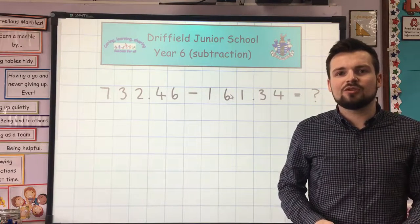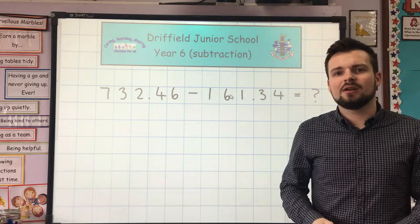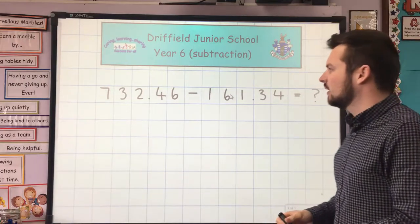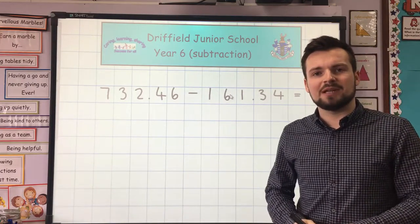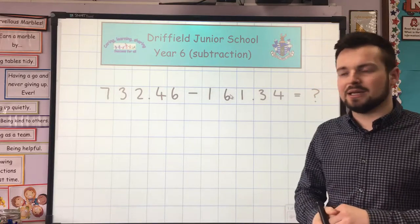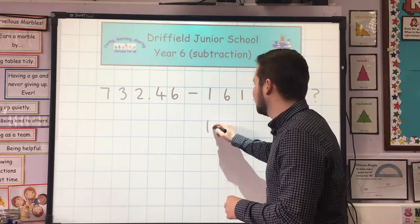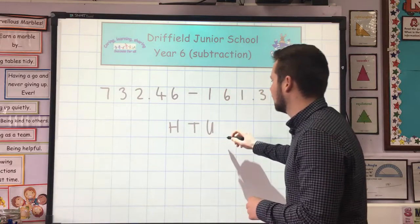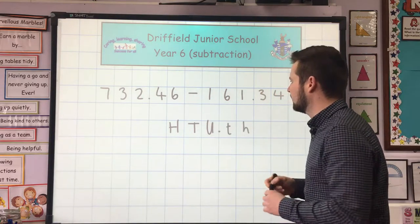I'm going to show you how to do column subtraction for numbers involving decimals. First thing I'm going to do is line up my place value headings and put all of my digits in the correct place: units, tens, hundreds, decimal place, tenths, hundredths.